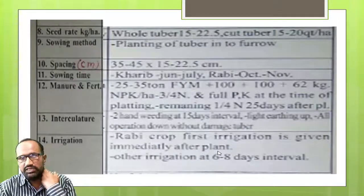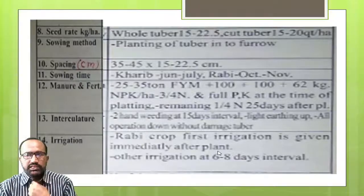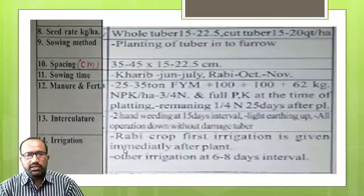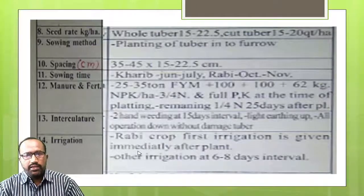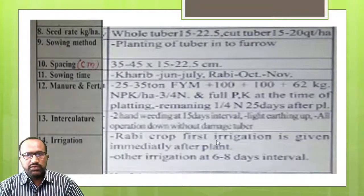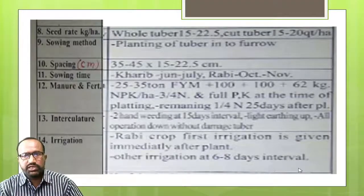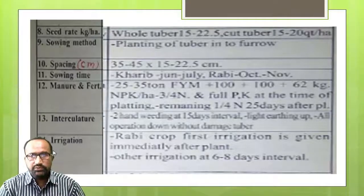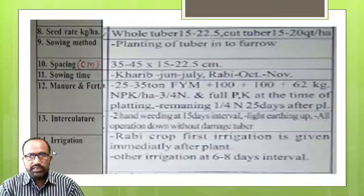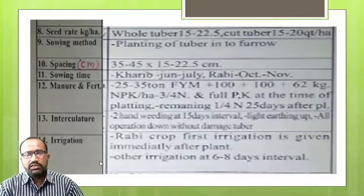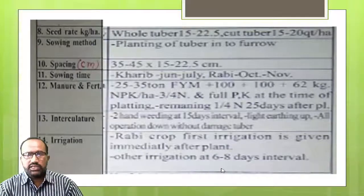Irrigation: the first irrigation should be given before planting, and then subsequent irrigations at 6 to 8 day intervals. The second irrigation should be given at the time of planting.